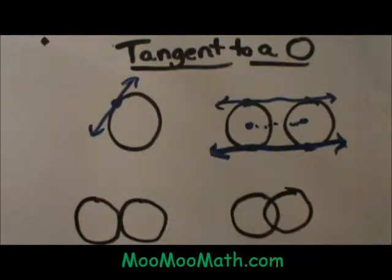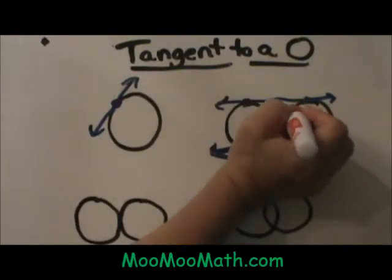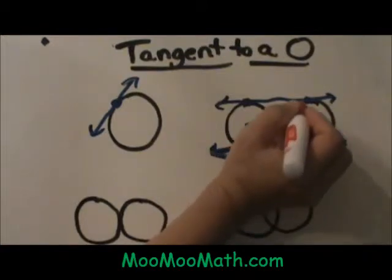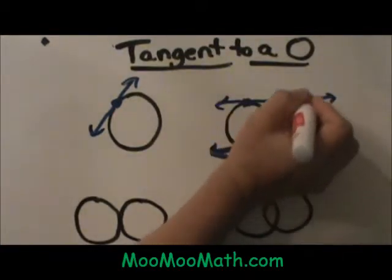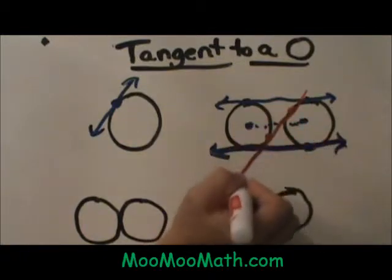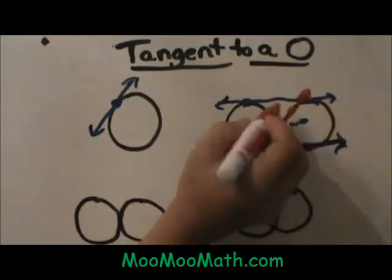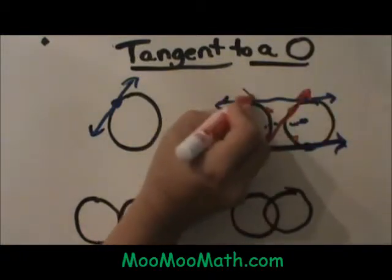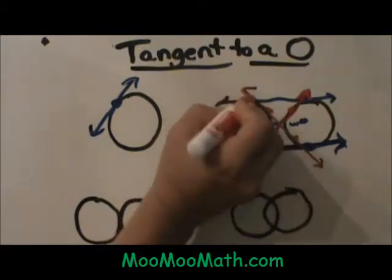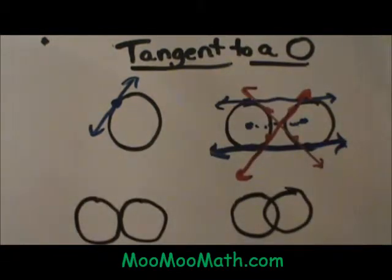I can also draw some internal tangents. What an internal tangent is, is a line that does cross the line that would connect the center of the two circles. Here is an internal tangent and here is another internal tangent. These two circles have four lines of tangency.